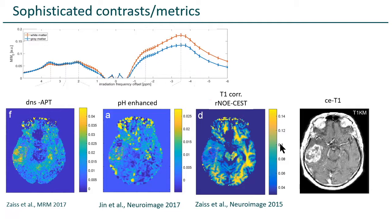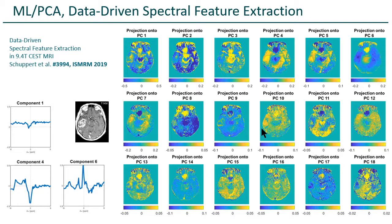In the time of machine learning, we can also do data-driven spectral feature extraction. This is just a principal component analysis of the spectra at 9.4T — no model at all. We just ask the data what's in there. You get a plethora of contrasts from these spectra, and some of them look really interesting. For example, here's a contrast that really matches with the gadolinium uptake area, or here's a contrast that shows the necrotic part. That's exciting, and for us physicists exactly what we want to do — show the radiologist more images.